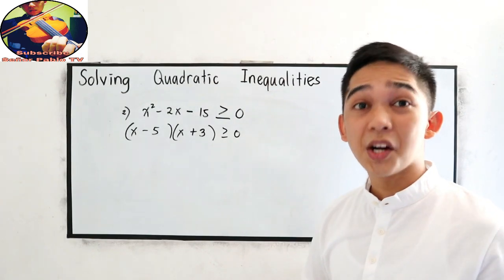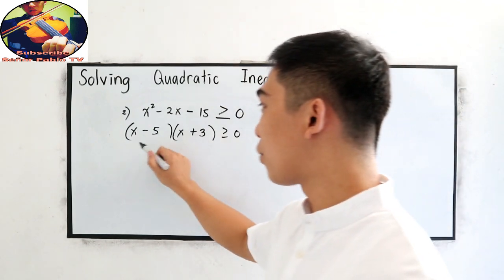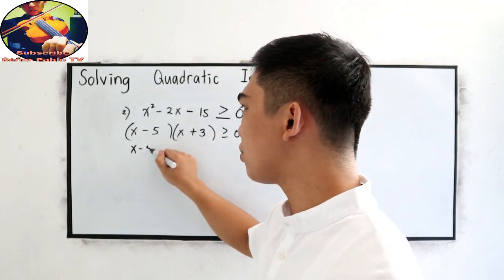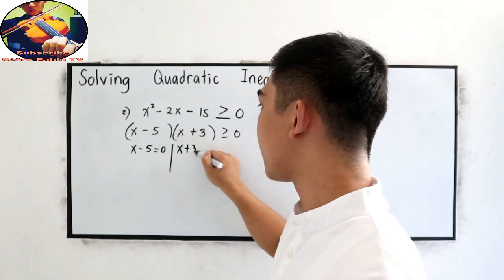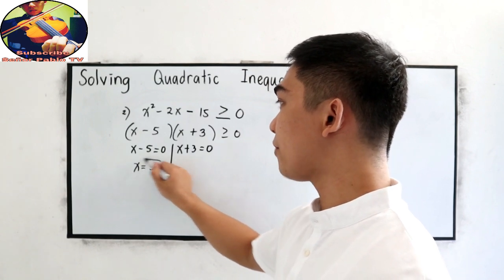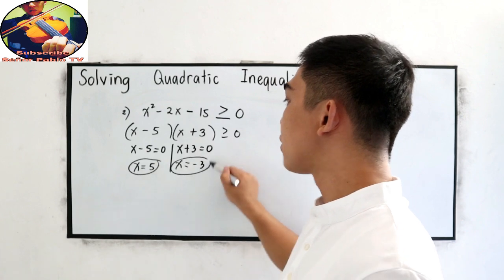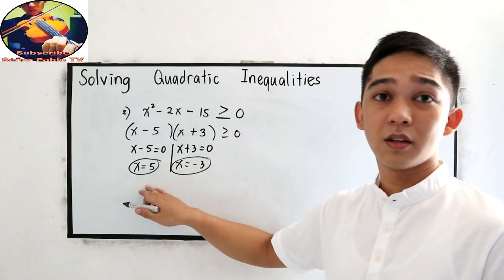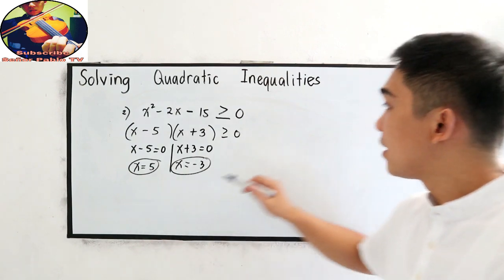Second step, find the zeros of the quadratic inequality. So our zeros are, just equate to 0. So x plus 3 is equal to 0. So x is equal to positive 5 and x is equal to negative 3. So this will be our zeros. Take note, that is not yet our final answer.